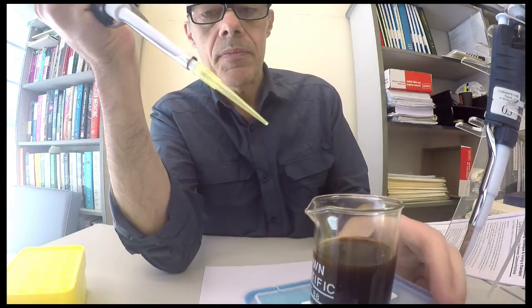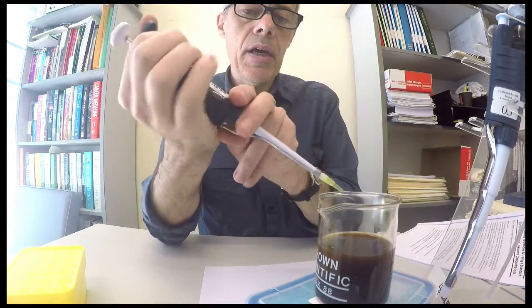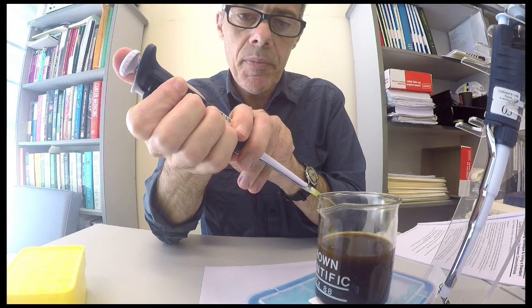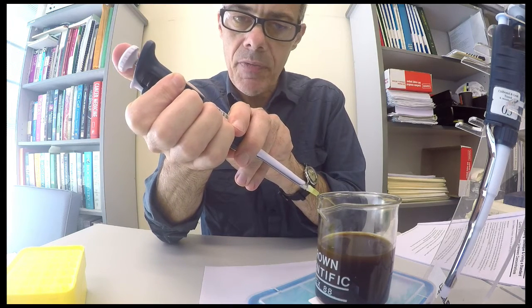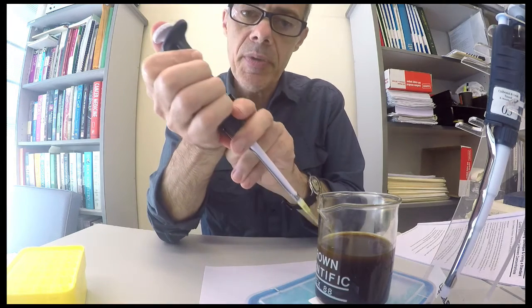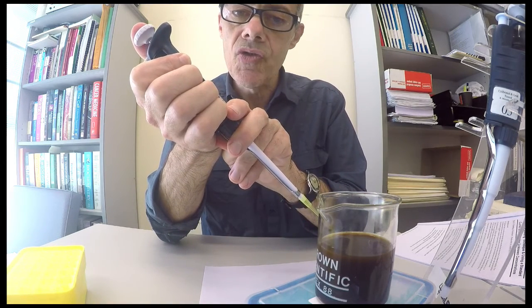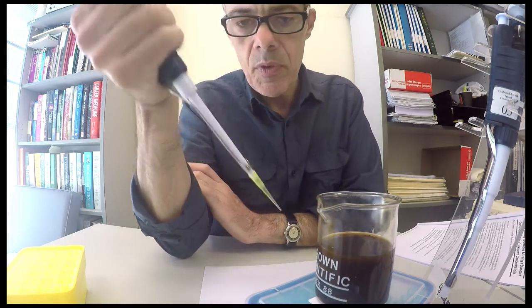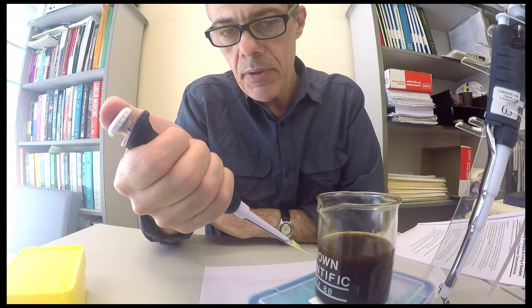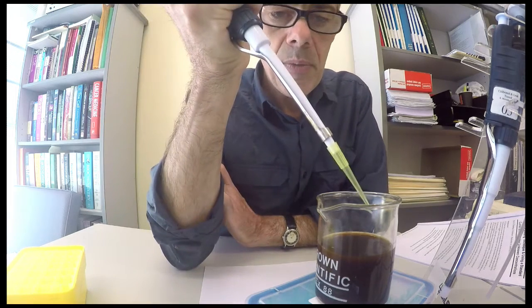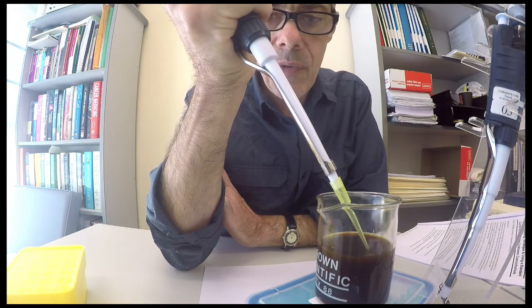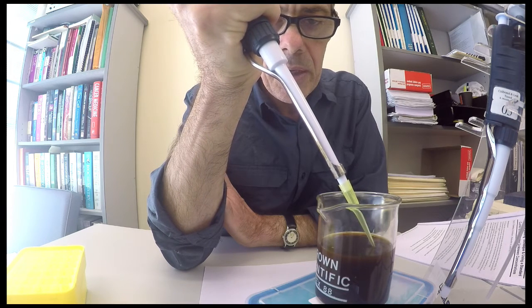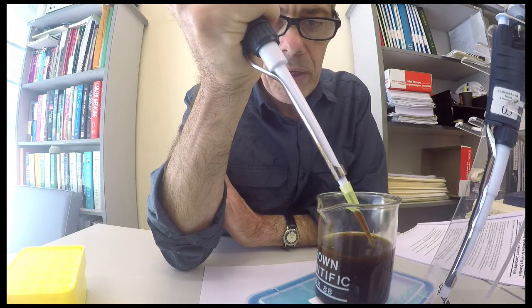So here's the pipette. I'm going to take it down to the first volume, which is the calibrated volume here. I'm going to immerse the tip under the solution, then I'm going to draw the solution up. So I'm dispensing down to the first position, I'm immersing it just below the surface, and then I'm slowly drawing that up.